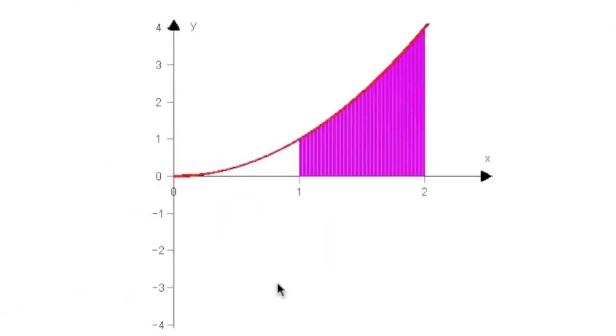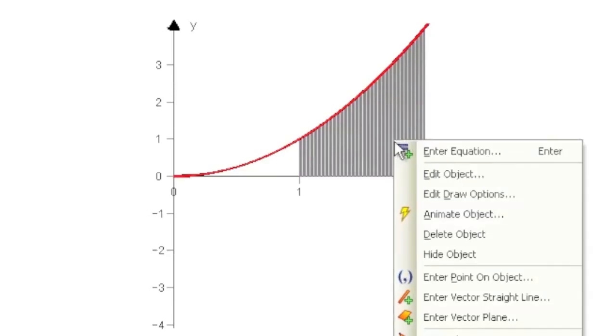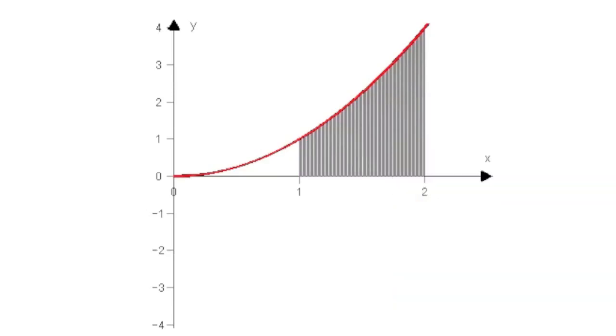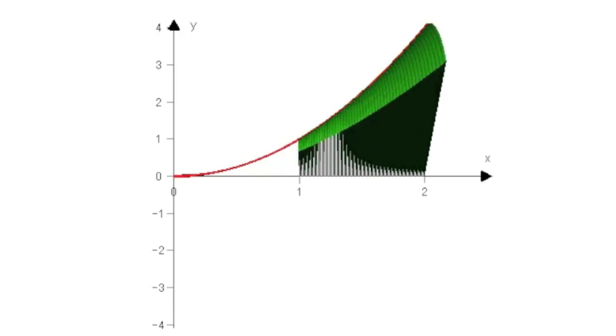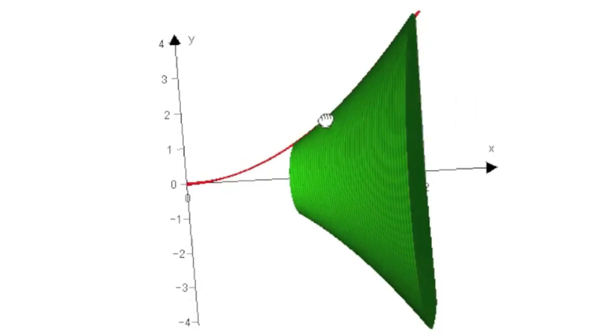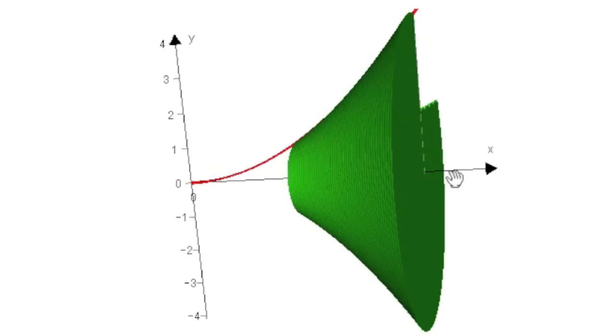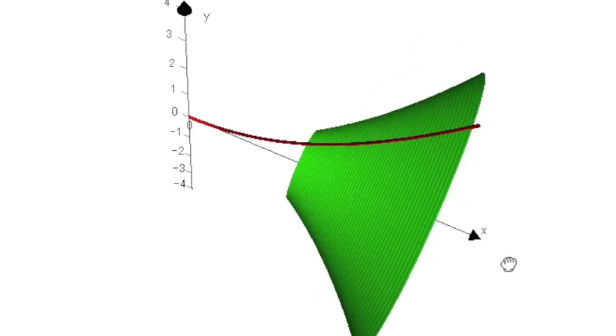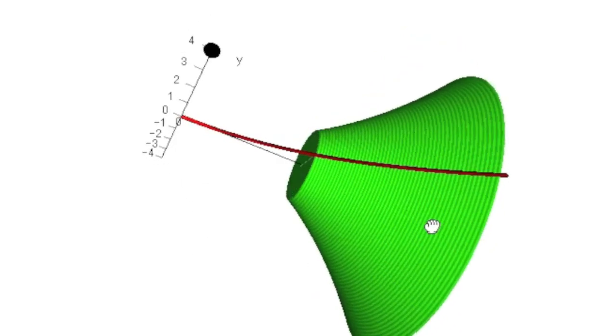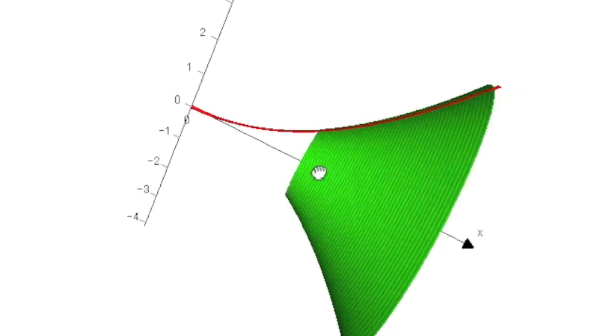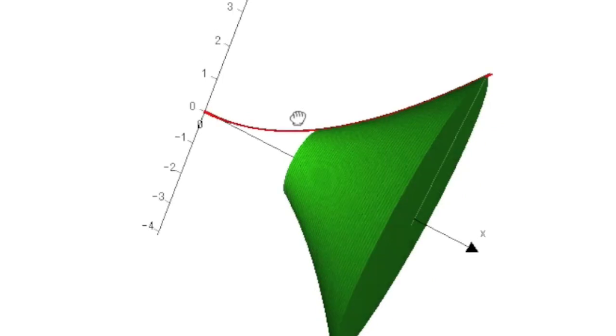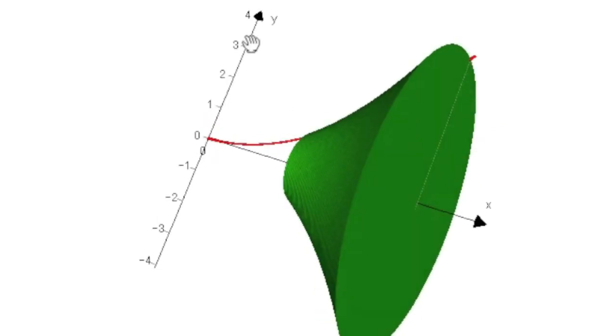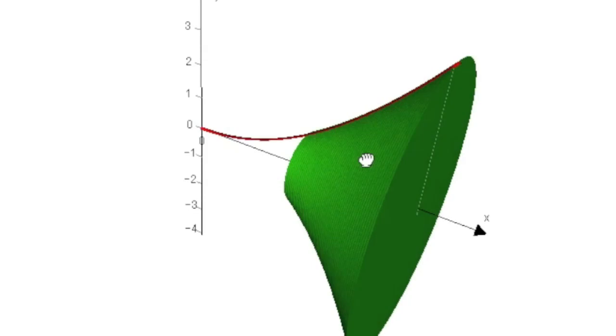So here we're going to look at the shape as it rotates around the x-axis. We've got this area under the curve y equals x squared between 2 and 1, and we're just going to rotate that around the x-axis now. You see we get this cool kind of lamp shade shape. You can basically produce any shape that you like. Just change the equation of the curve and let your imagination run wild.